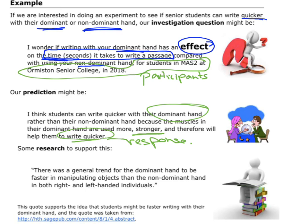Then I would jump onto the internet, do a Google search, and see what research I can find to support that. I found a little quote here, and I've noted what website I got it from — that's important to do. It says that the general trend is for the dominant hand to be faster in manipulating objects than the non-dominant hand in both right and left-handed individuals. I think that connects nicely with the writing speed that I want to do an experiment for.